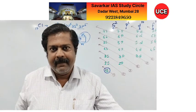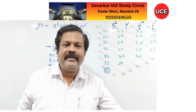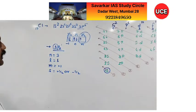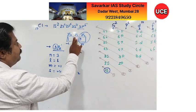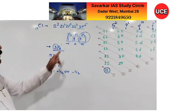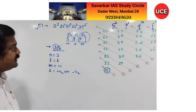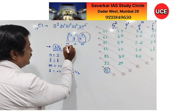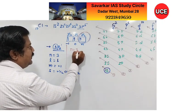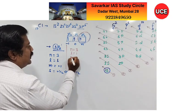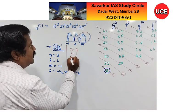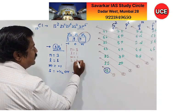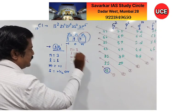For phosphorus (atomic number 15), the last electron is also in 3pz. So the quantum numbers are the same: n = 3, l = 1, m = +1, and s = +½ or −½.